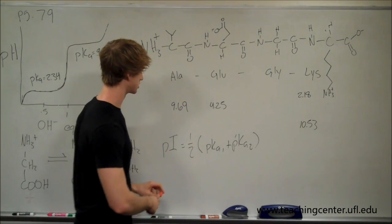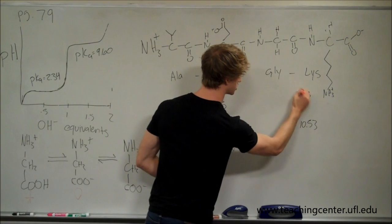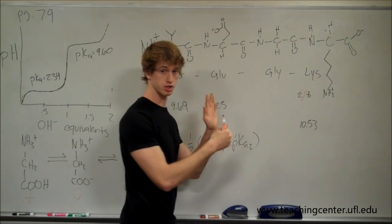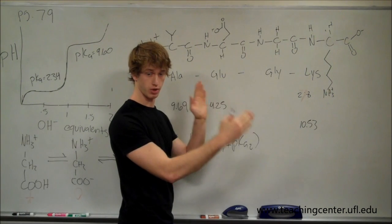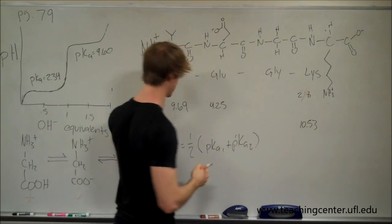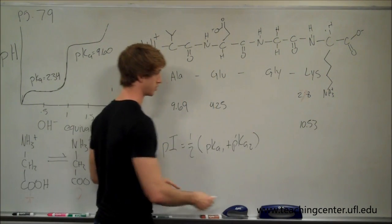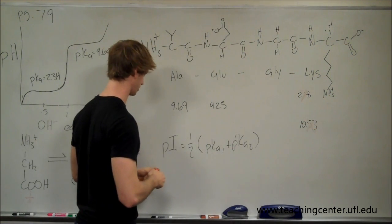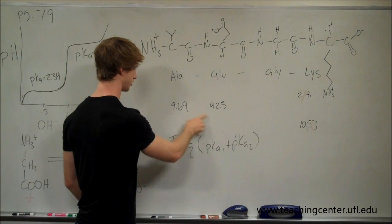So we can look at these and say, okay, well, this one is too acidic. It's going to be protonated, it's going to have a charged species on either side of that buffer region, if we were to draw the graph. And the same thing goes for this one, this is too high. So we're left with 9.69 and 4.25.